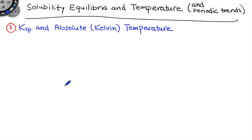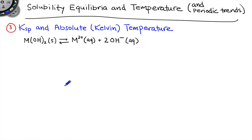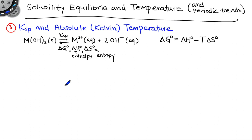We're going to finish off by discussing the relationship between KSP and the absolute or Kelvin temperature, and how we can reason from the temperature dependence of KSP to the thermodynamic parameters delta H and delta S. To do this, let's begin with the equilibrium chemical equation for the dissolution of our metal hydroxides. KSP is intimately related to the thermodynamics of the reaction — specifically the free energy change delta G, the enthalpy change delta H, and the entropy change delta S. The first equation is the definition of free energy: delta G° = delta H° − T·delta S°.